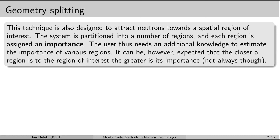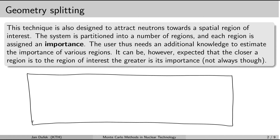Different parts of the system are going to contribute differently to the result. If your result is a response of a small detector, consider a big system with a small detector in the corner. A neutron history that starts on the other side of the system with a direction pointing away is not very likely to contribute to our result. It's very unlikely that the neutron would penetrate through the whole system and be captured in the detector — such a history is more likely to exit the system entirely.